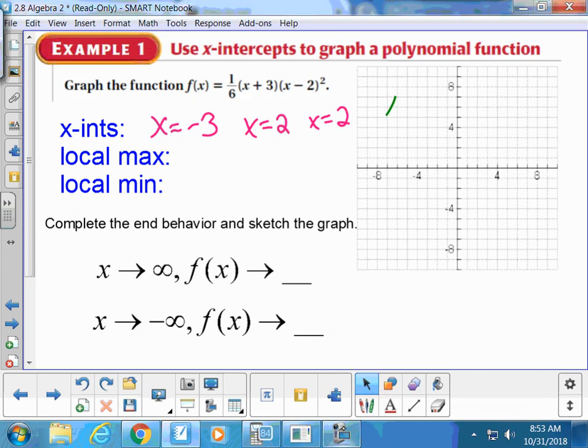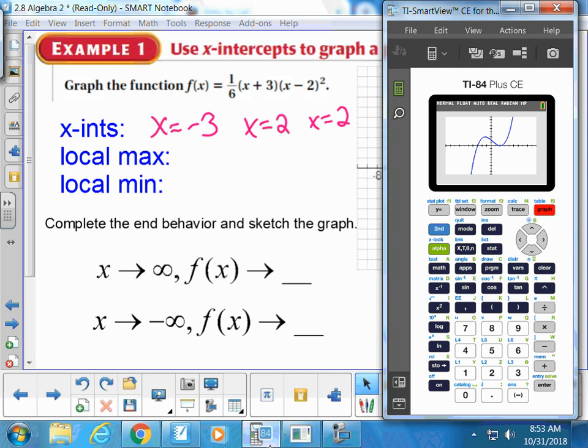We are now discussing where our local minimum lives. Everybody point to where they think the local minimum lives. Right here, okay. We are going to use the calculate menu to find this local minimum. It's second trace to get yourself to the calculate menu. What choice do you think we should use if we're trying to find a local minimum? Choice three, and you can just hit button three minimum.